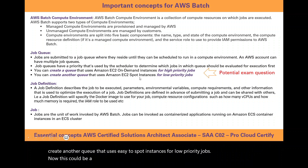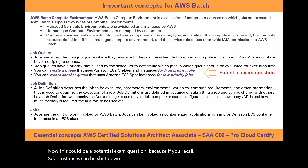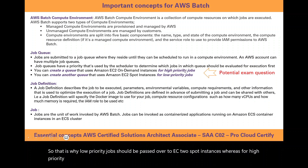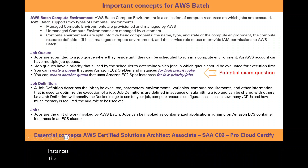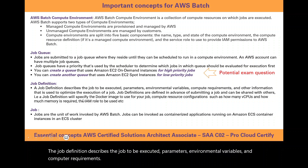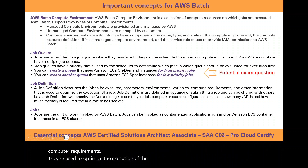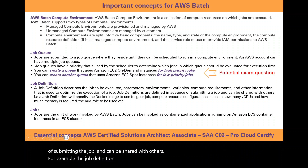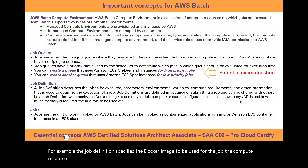This could be a potential exam question — Spot instances can be shut down instantly depending on whether the capacity of EC2 instances is available. That is why low priority jobs should be passed to EC2 Spot instances, whereas high priority jobs which should not be allowed to fail should be placed onto EC2 on-demand instances. The job definition describes the job to be executed, its parameters, environment variables, and compute requirements used to optimize execution. Job definitions are defined in advance of submitting the job and can be shared with others. For example, the job definition specifies the Docker image to be used, compute resource configurations such as how many vCPUs and how much memory is required, and the IAM role to be used.